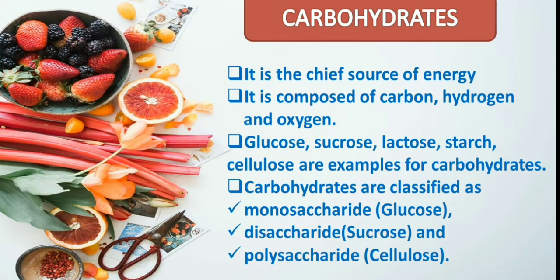In addition to providing energy and serving as building blocks for bigger macromolecules, carbohydrates are essential for proper functioning of the nervous system, heart and kidneys. Glucose can be stored in the body for future use. In humans, the storage molecule of carbohydrate is called glycogen, and in plants it is known as starch. Glycogen and starches are considered slow-releasing carbohydrates. This classification is based on the number of sugar molecules present in each group.